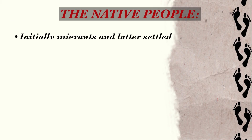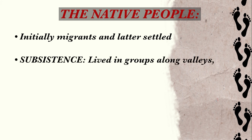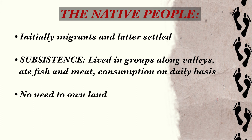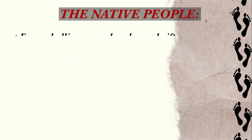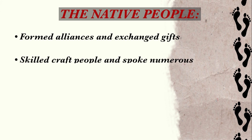The native people were initially migrants and later settled into subsistence living. They lived in groups along valleys, ate fish and meat on a daily basis, and had no need to own land. They formed alliances and exchanged gifts, were skilled craft people, and spoke numerous languages.